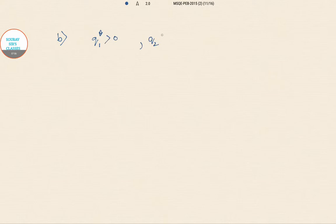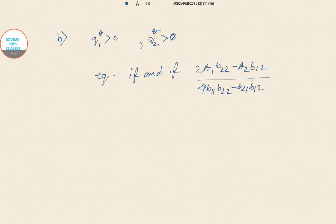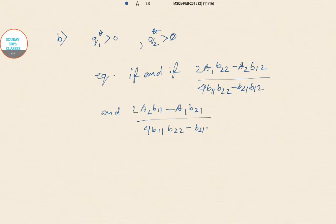Now we will go to part B. For Q1 star greater than 0 and Q2 star greater than 0, equilibrium is achieved if and only if: (2·A1·B22 minus A2·B12) divided by (4·B11·B22 minus B21·B12) is greater than 0, and similarly (2·A2·B11 minus A1·B21) divided by (4·B11·B22 minus B21·B12) is greater than 0.